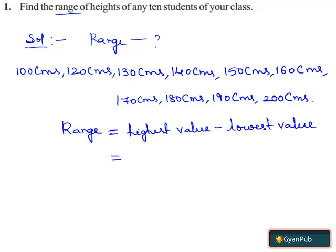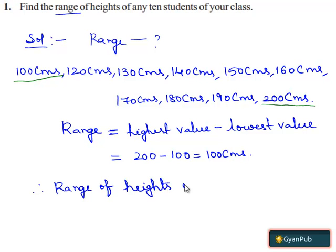Here the highest value is 200 centimeters and the lowest value is 100 centimeters. Therefore, the highest value is equal to 200 minus the lowest value which is 100, which equals 100 centimeters. Therefore, range of heights of 10 students in a class is equal to 100 centimeters.